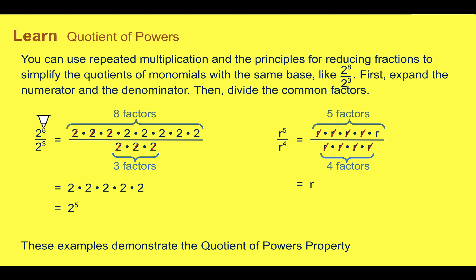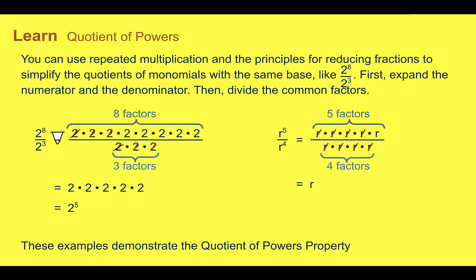2 to the 8th is really just 2 multiplied 8 times. 2 to the 3rd power is 2 times 2 times 2. Then when we're dividing common factors, we can see 2 shows up on the top and the bottom, so we can cancel them out. Every time we do 2 divided by 2, we get 1, and multiplying by 1 doesn't change anything. So we can get rid of as many pairs from the top and the bottom as we can. There were 5 twos left on the top, so our final answer would be 2 to the 5th.